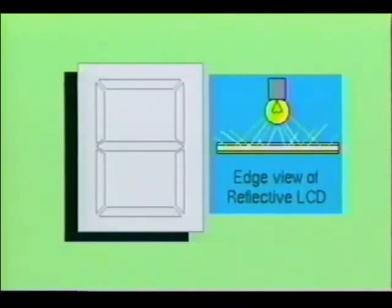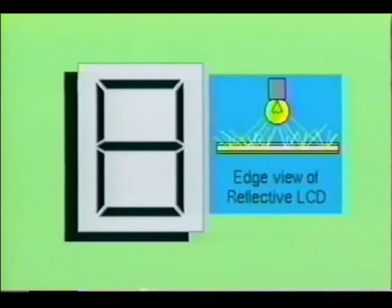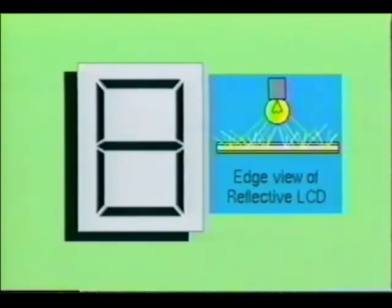The reflective-type cell operates from an external light source. When not activated, light is reflected in the usual way from the mirror surface, which causes the cell to appear transparent. However, when activated, the dynamic scattering phenomenon occurs and the cell will appear quite bright. The primary difference between the transmittive-type cell and the reflective-type cell is in the method by which the light source is applied and in the construction of the device.